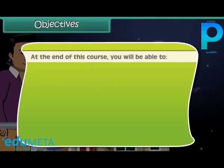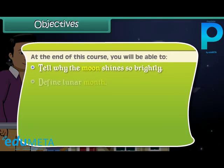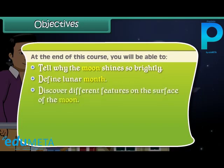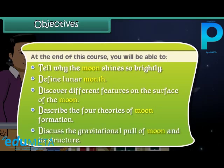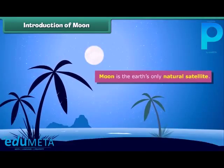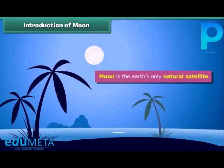At the end of this course, you'll be able to tell why the moon shines so brightly, define lunar month, discover different features on the surface of the moon, describe the four theories of moon formation, and discuss the gravitational pull of the moon and its structure. The moon is the Earth's only natural satellite.